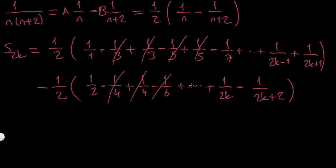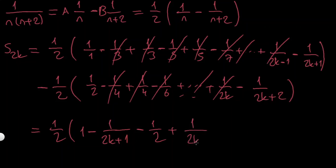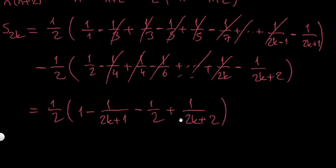So again, all the middle terms cancel out — everything goes except the first and last terms. Regrouping the remaining terms, I have 1/2 times: from the first parenthesis, 1 minus 1/(2k+1); and from the second parenthesis, minus 1/2 plus 1/(2k+2). So S2k equals 1/2 times [1 − 1/(2k+1) − 1/2 + 1/(2k+2)].